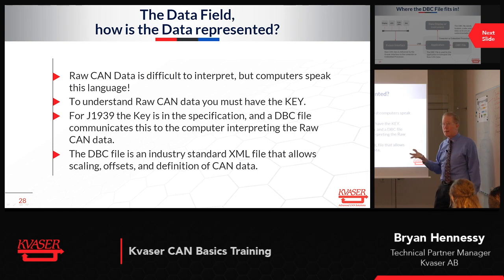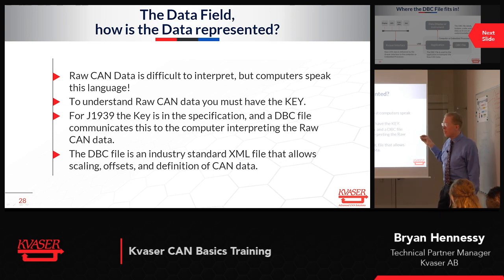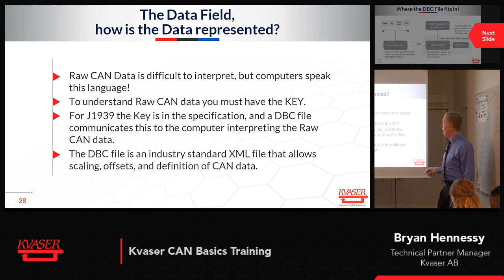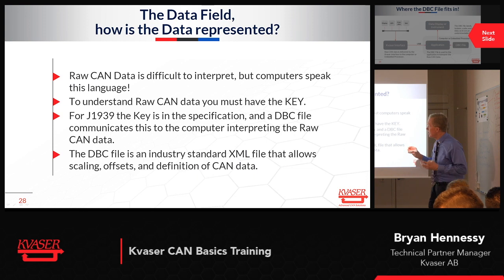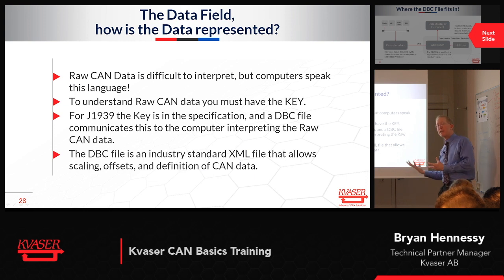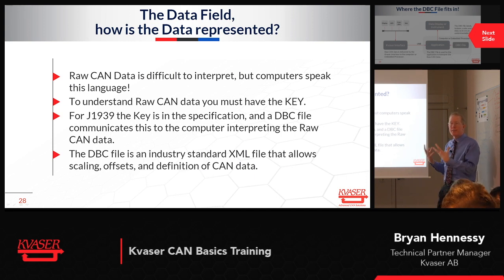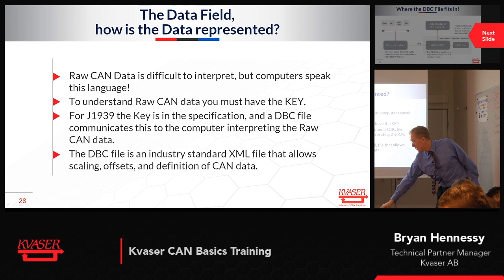A DBC file is an industrial standard — for programmers in the room, it is based on an XML format, which is just a standard that defines how you make a file that different computers can read and write. A DBC file is fixed for any given CAN network and changes as the network evolves. We have a free DBC file editor on our website you can download. The biggest thing a DBC file does is label the data, define it within the CAN frame data structure, and then set scaling and offsets — defining whether it's floating point, signed integer, or unsigned integer — to get to the meaningful number you want.